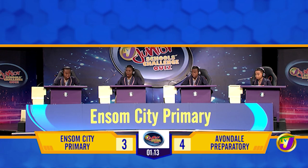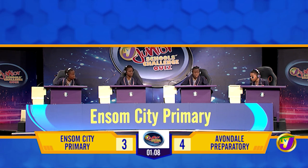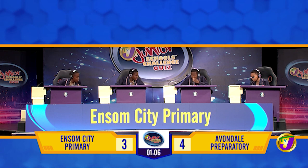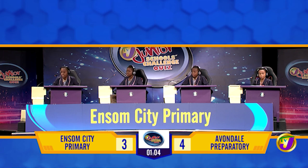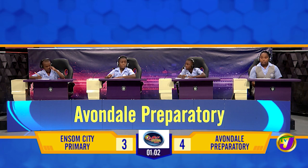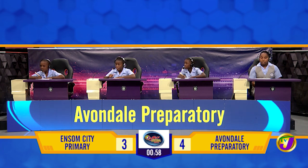Ensom City — Social Studies: which country is known as the Rainbow Nation? Australia. Incorrect — South Africa. Social Studies for Avondale: which country is known as the Celestial Empire? Britain — Britain. Incorrect — China.